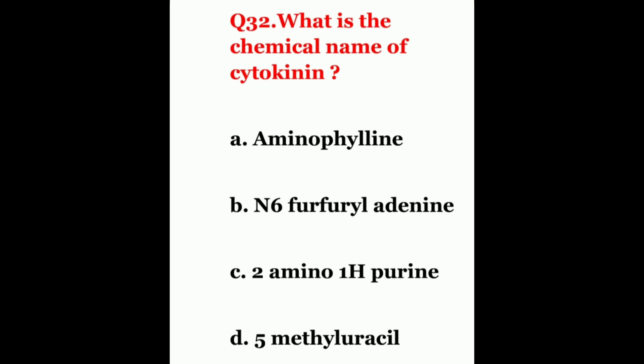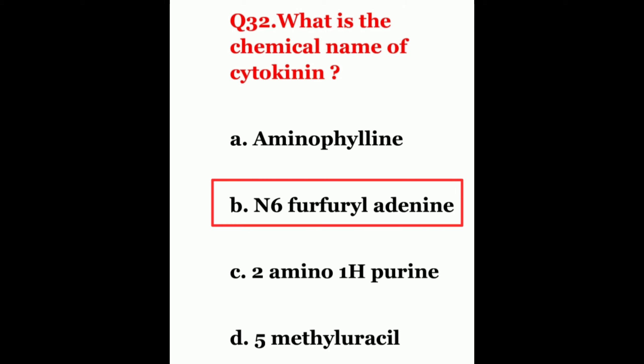Question 32. What is the chemical name of cytokinin? The options are aminophylline, N6-furfuryl adenine, 2-amino-1H-purine, or 5-methyl-uracil. The correct answer is N6-furfuryl adenine.